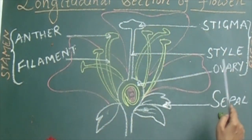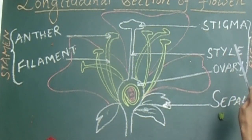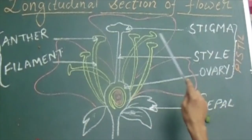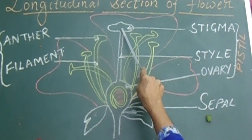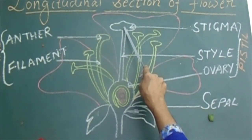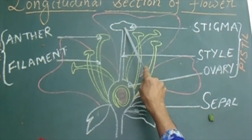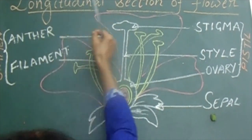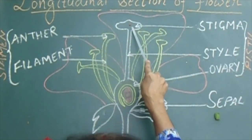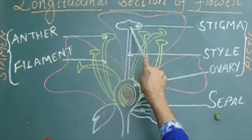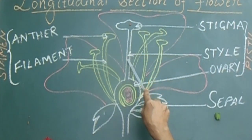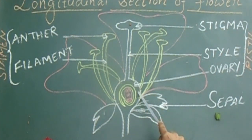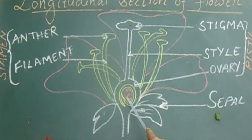Next, the female reproductive part. As we know, it has stigma, style, and then ovary. The function of stigma: it is the topmost part and the female part of a flower, and its function is it collects the pollen grains. These pollen grains will grow as a pollen tube, and that tube will emerge inside the ovary, come inside the ovule, and hence the process of fertilization occurs.